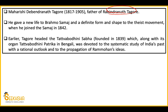Debendranath Tagore joined the Brahmo Samaj in 1842. After Raja Ram Mohan Roy's death, Brahmo Samaj had set back. After people like Debendranath Tagore joined, Brahmo Samaj got a push forward. Before joining Brahmo Samaj, Tagore had founded the Tattab Bodhini Sabha. A periodical called Tattab Bodhini Patrika was also published in the Bengali language. Debendranath Tagore was also its editor. The language is sometimes asked — it was published in Bengali. The Patrika aimed to systematically study India's past and propagate Raja Ram Mohan Roy's ideas.